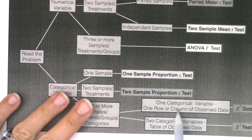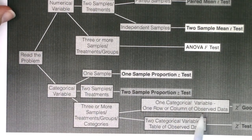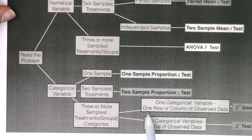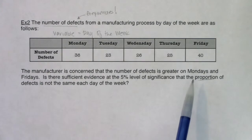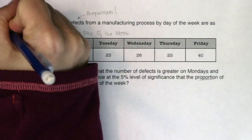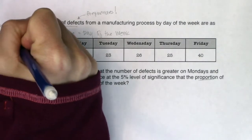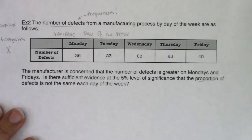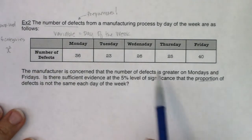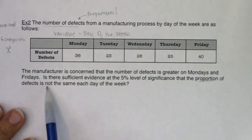There are five days of the week, and I only have the one variable — just day of the week. I'm not tracking which employee made the defect or whether it happened in daytime or nighttime. There was one row of observed data — all those frequency counts. The manufacturer thinks defects are more likely on Monday or Friday, so that becomes the alternate hypothesis. He'll assume everything is fine unless we have enough evidence to show something's happening on Mondays and Fridays.